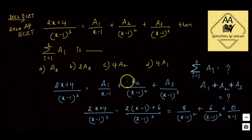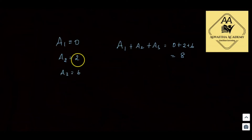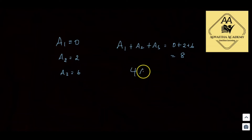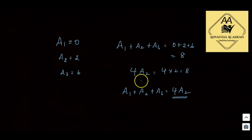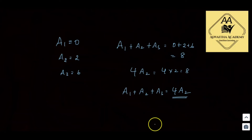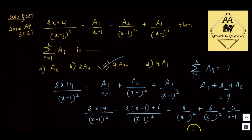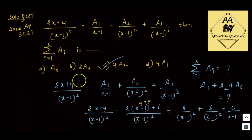We can also express the answer in terms of A2. Since A2 = 2 and the total is 8, we have 8 = 4 × 2 = 4·A2. So A1 + A2 + A3 = 4·A2. Option C is correct. This is an easy question — once you know the trick of rewriting the numerator, it's very simple.